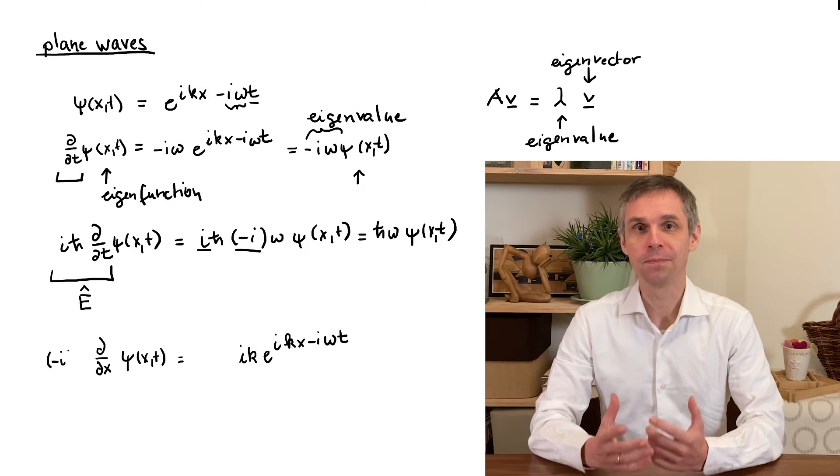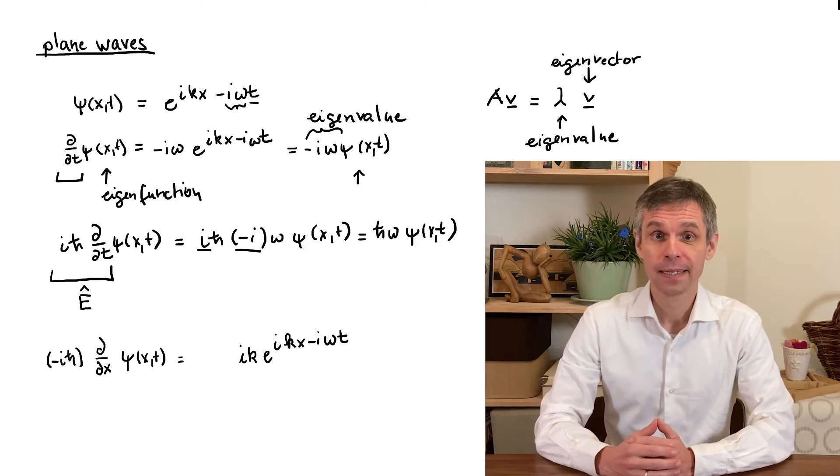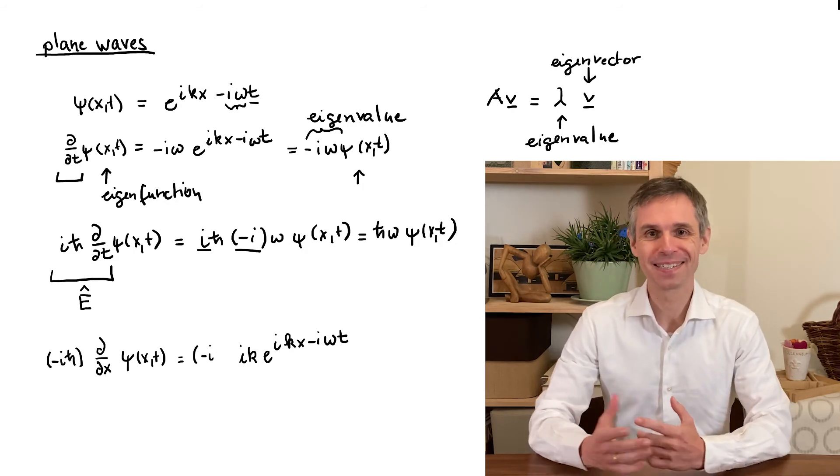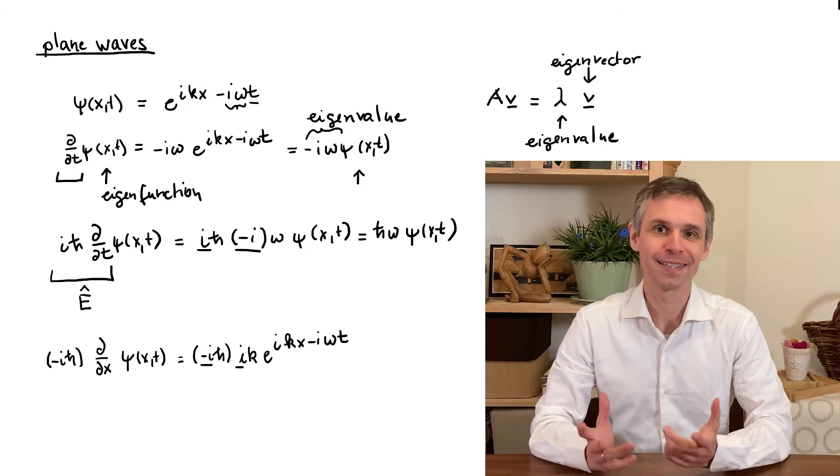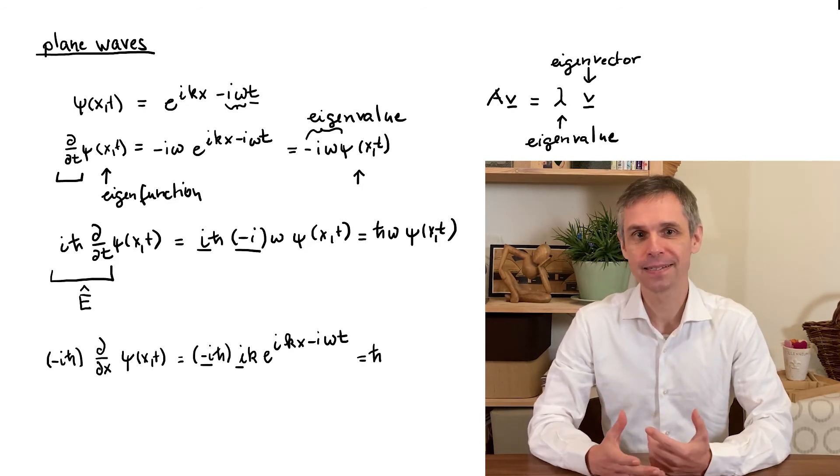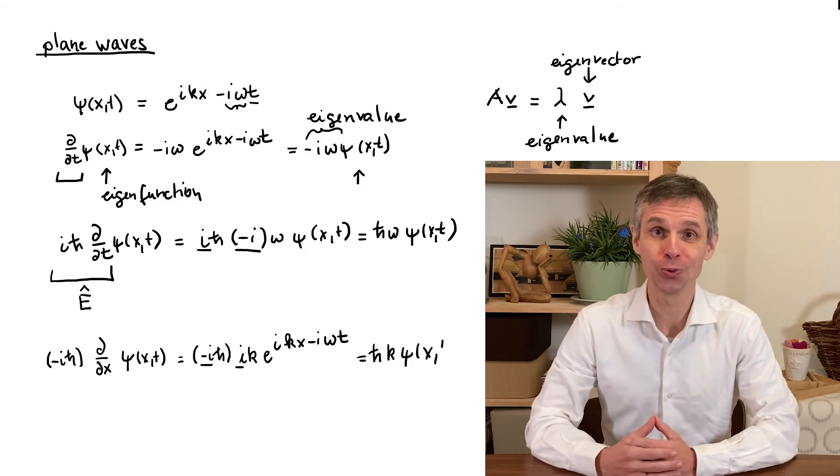When we now multiply this expression by minus ih bar then the factors i and minus i again cancel and therefore we obtain the expression h bar k times psi, hence have extracted the momentum according to the de Broglie rule.